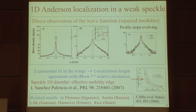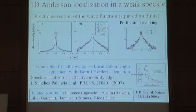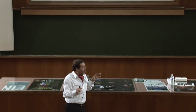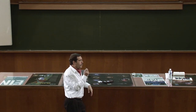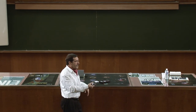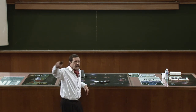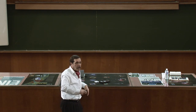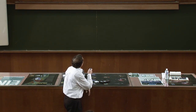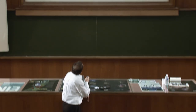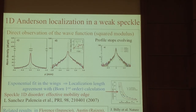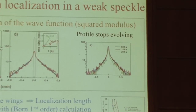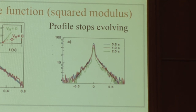Cette longueur de localisation, à 1D, on peut utiliser un développement de Born à l'ordre le plus bas, faire des calculs analytiques, et on voit que ça correspond parfaitement à un calcul ab initio. Je connais l'énergie cinétique de mes atomes, je connais tout sur mon speckle parce que gaussien. Ce qu'on voit est remarquable : après 0,8 seconde, 1 seconde, 2 secondes, le profil reste localisé. Ça diminue un peu parce qu'on perd quelques atomes, mais les atomes commencent à s'étendre et paf, c'est bloqué — c'est la localisation d'Anderson, une visualisation directe.